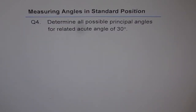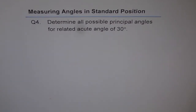Measuring angles in standard position. Question 4: Determine all possible principal angles for a related acute angle of 30 degrees. This is a very interesting and important problem. I would like you to do it yourself — stop the video at this moment and then look into my solution.